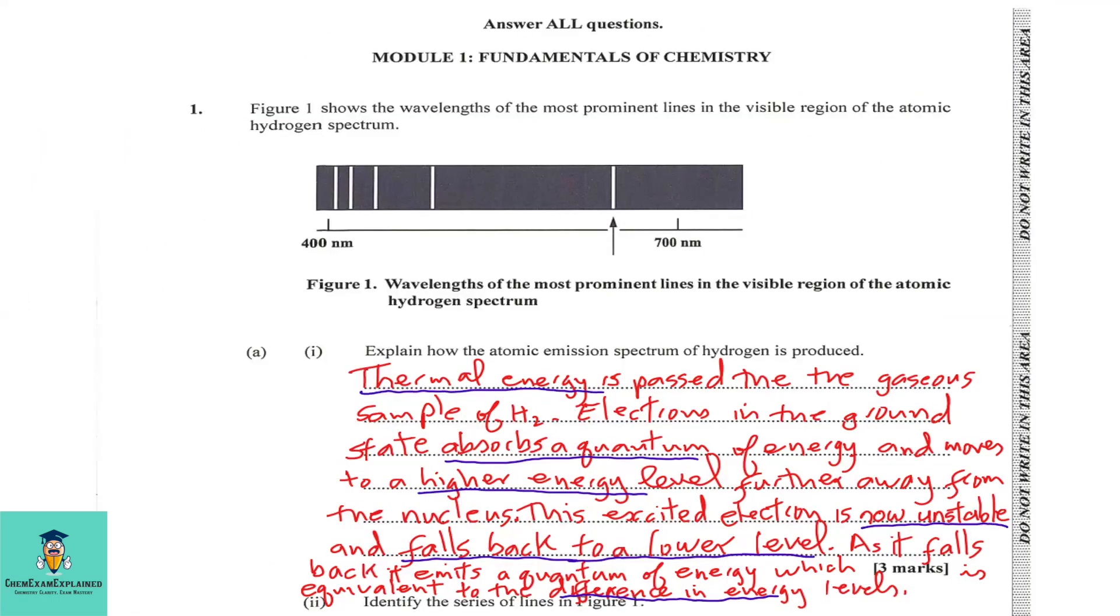Number 1. Figure 1 shows the wavelength of the most prominent lines in the visible region of the atomic hydrogen spectrum. Part A1: Explain how the atomic emission spectrum of hydrogen is produced.